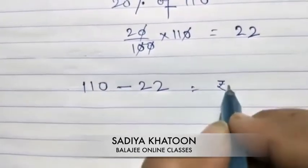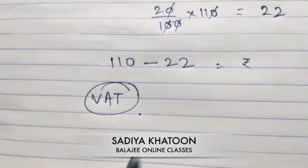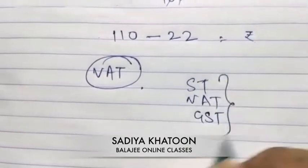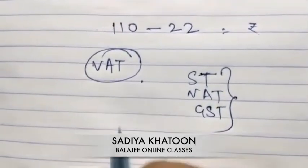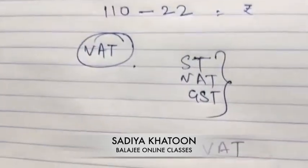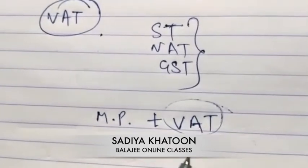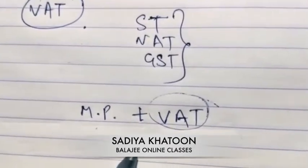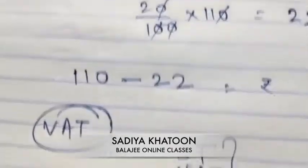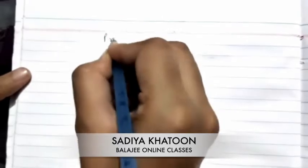This is the opposite of VAT. VAT, which is a tax — it can be a sales tax, VAT, or GST — is always added to the marked price. So to summarize: in discount we always subtract from the marked price, and in VAT or GST we always add to the marked price.